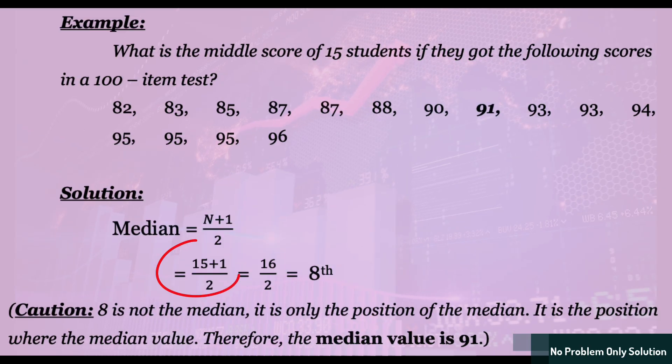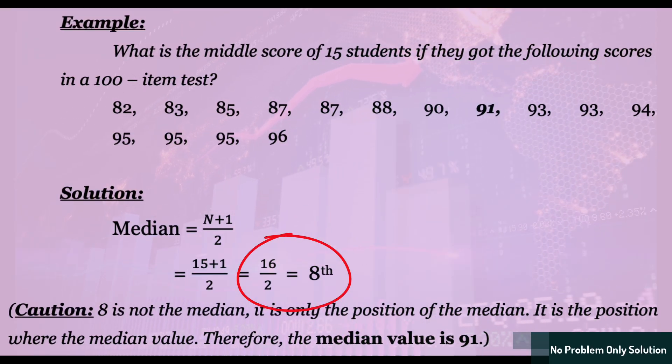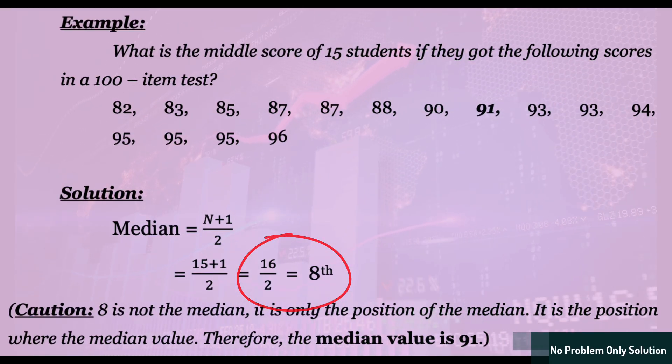So, for our data, we have 15 scores, right? So, that's 15 plus 1 divided by 2, which is 16 divided by 2, which equals 8. Okay, so the median is in the 8th position.